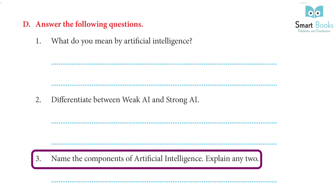3. Name the components of artificial intelligence and explain any two: A voice assistant is a kind of AI software that can comprehend and carry out human-spoken orders. Examples include Google Assistant, Cortana, Siri, and Alexa. Face detection is an AI technology used for various purposes. We use face detection for filters on the face while taking pictures and for face ID for unlocking the phone.